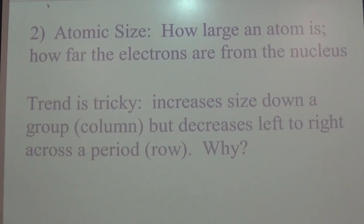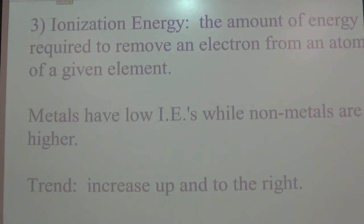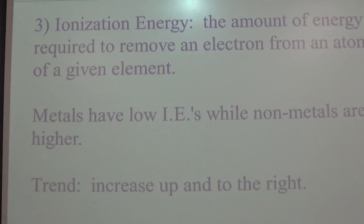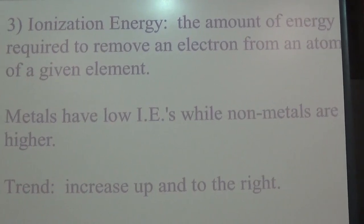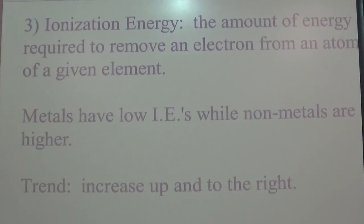Our third trend is called ionization energy, which now kind of relates back to what we just talked about. The size also contributes to the ionization energy. So first, let's define this term, ionization energy. It is the amount of energy that is required to remove an electron from an atom of a given element. So the amount of energy required to remove an electron from an atom is going to be different if I have a big atom. Those electrons are further away from the nucleus, and it won't be very difficult to remove the electron. So metals have low ionization energies, but non-metals are going to have higher ionization energies. And in fact, this trend is super easy.